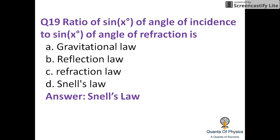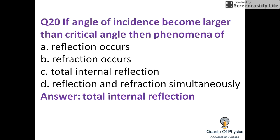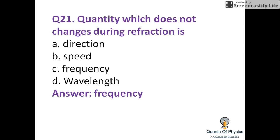The unit of power of a lens is the diopter. The ratio of the sine of the angle of incidence to the sine of the angle of refraction — sine i upon sine r — is called Snell's law. If the angle of incidence becomes larger than the critical angle, total internal reflection occurs.